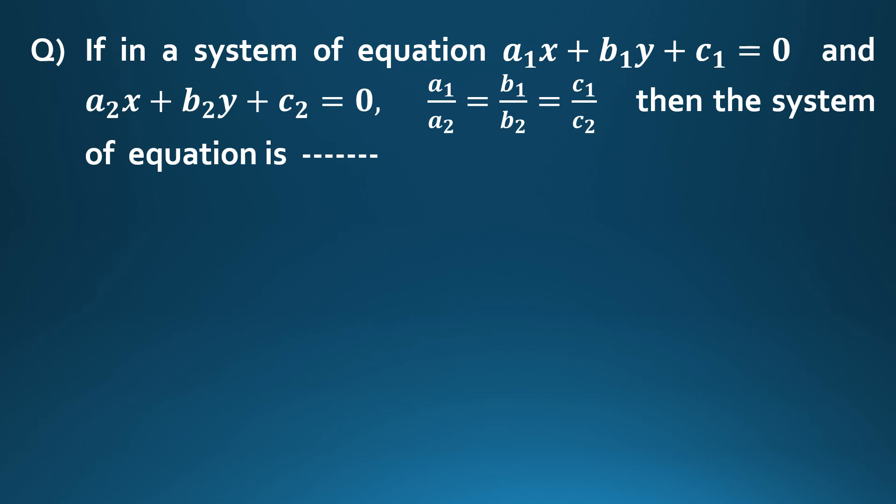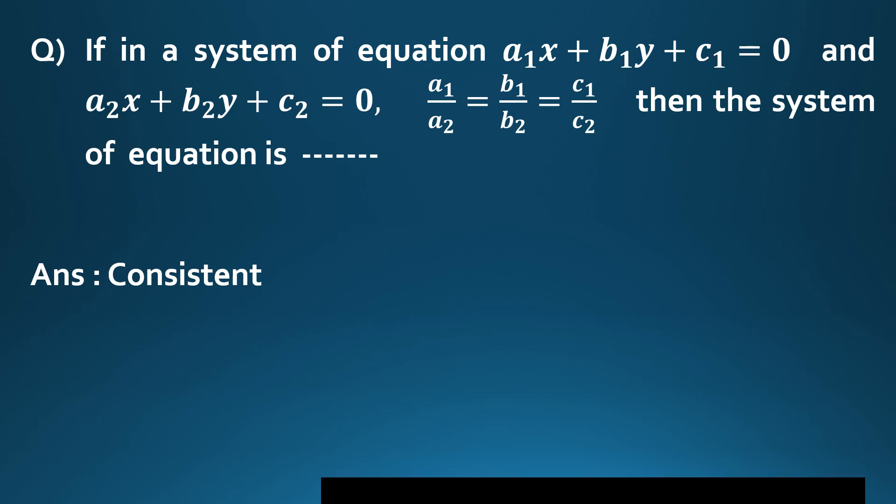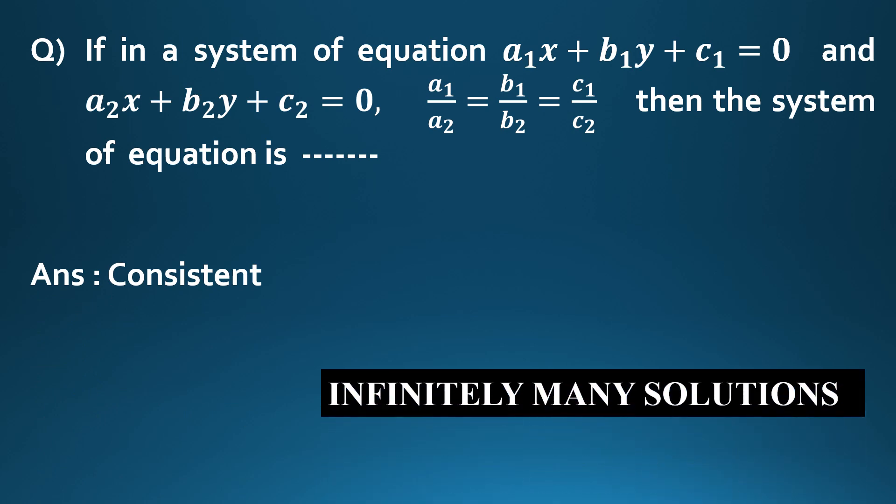If a1/a2 = b1/b2 = c1/c2, then the system of equations is consistent. In a system a1x + b1y + c1 = 0 and a2x + b2y + c2 = 0, when this condition holds, the system is consistent and has infinitely many solutions.